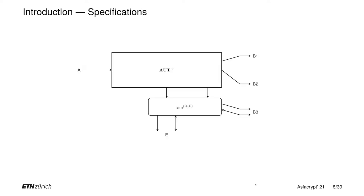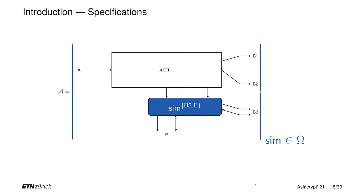Recall the authenticated channel from before. This resource consists of an authenticated channel and a fixed simulator attached to Bob3's and Eve's interfaces. Usually, one is not interested in a single system, but actually in any resource that gives some guarantee. So we can consider instead the set of systems that give the guarantee that if Bob1 or Bob2 — any honest Bob — reads a message, then Alice wrote it. A specification then allows abstracting away from what Eve and Bob3 might be doing at their interfaces, and simply captures any resource giving this guarantee.